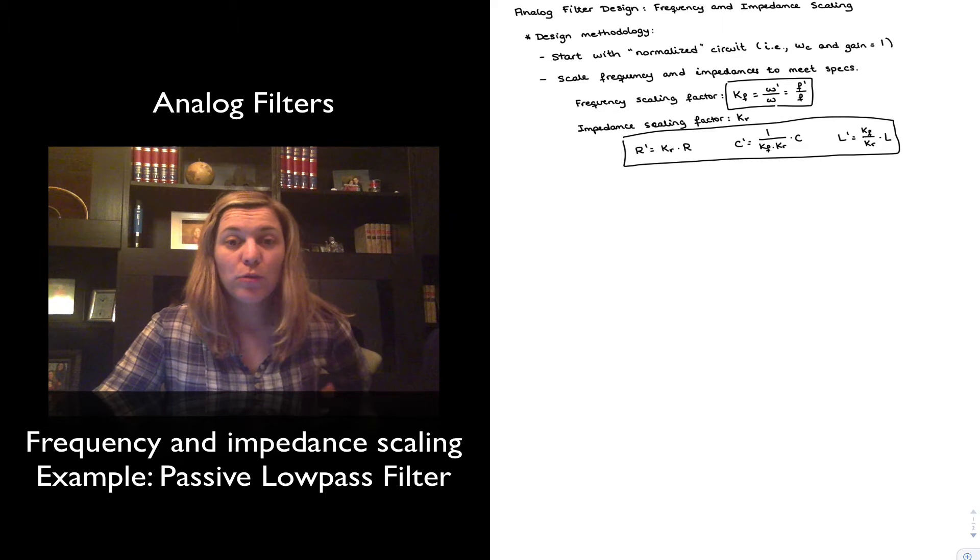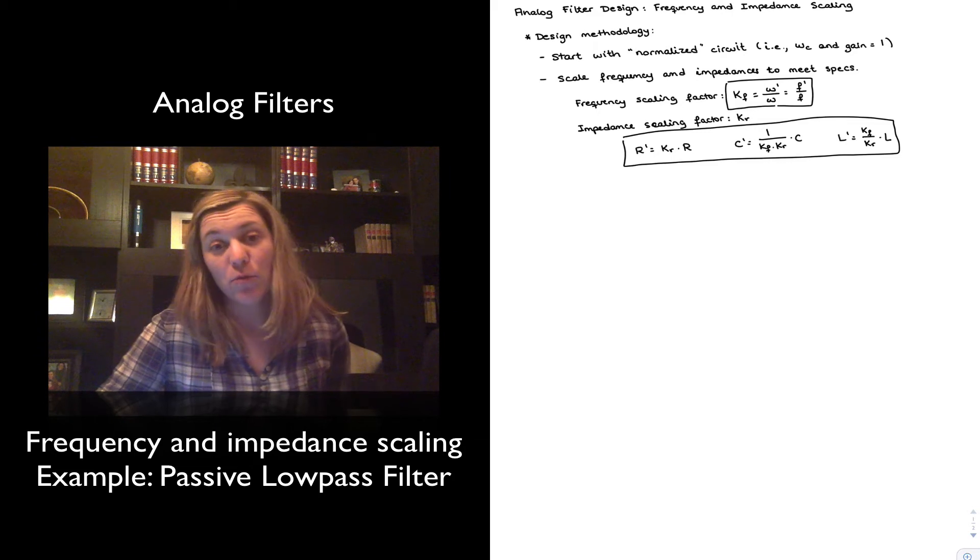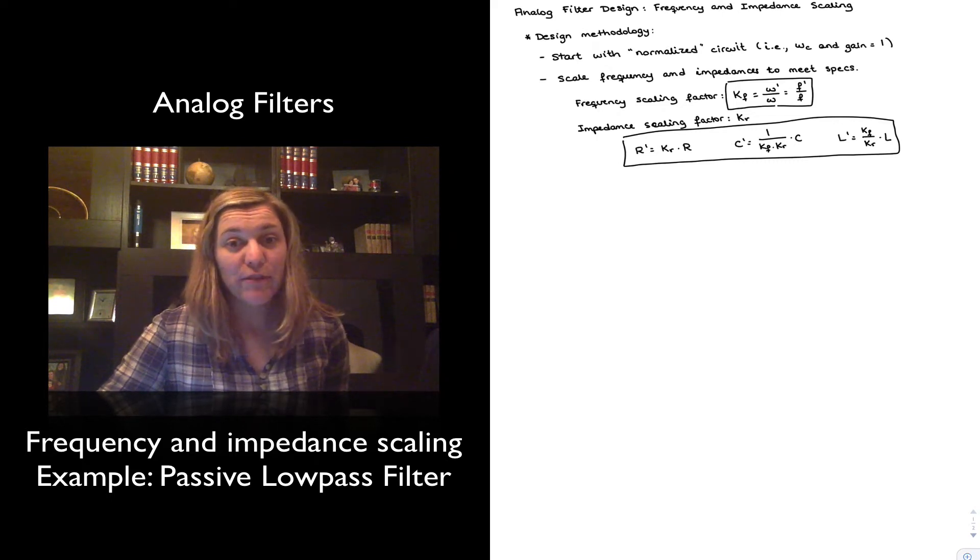In order to do that, we use a frequency scaling factor, which I have labelled K sub f, and it's basically the ratio of omega prime to omega, meaning the frequency that we want to achieve, the cutoff frequency that we want to achieve, divided by the cutoff frequency of the normalized circuit. Since omega is related to f by a factor of 2 pi, Kf can also be expressed as the ratio of f prime to f.